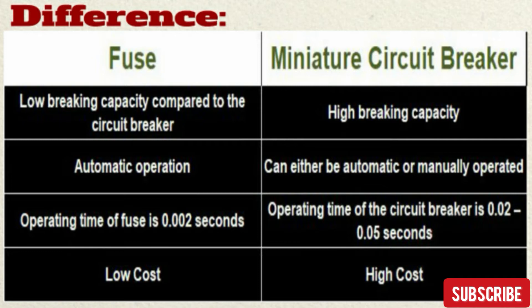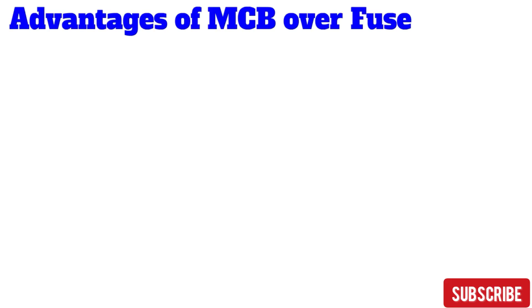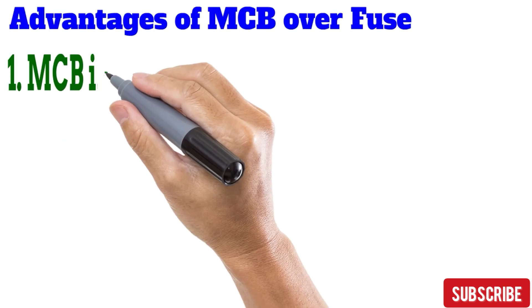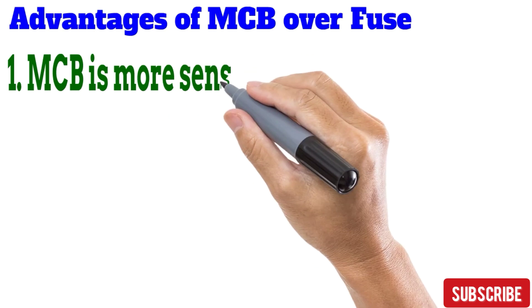Fuses are generally low cost, but MCBs are high cost. Nowadays people are switching over to RCBO devices — RCBO means Residual Current Breaker with Overcurrent protection, which comes from the RCD family. If you want to know how RCD, RCCB, or RCBO works, click the info symbol in this video.